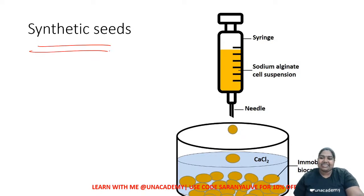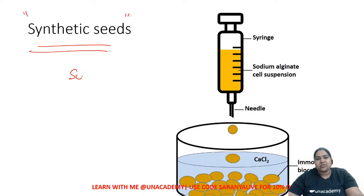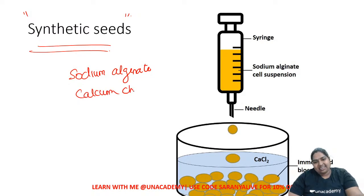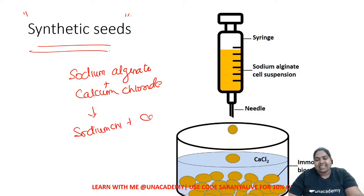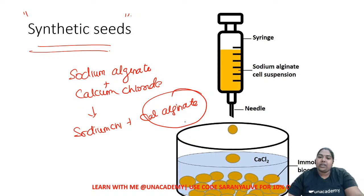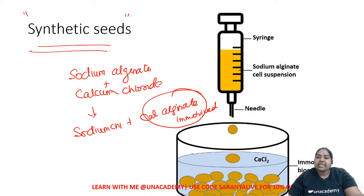For synthetic seeds, you use sodium alginate and calcium chloride. They react to form sodium chloride and calcium alginate. The calcium alginate is a polymer that gets immobilized, protecting the seeds from the environment. The beads are formed using a needle due to polymerization — this is a standard lab procedure.